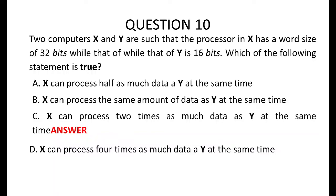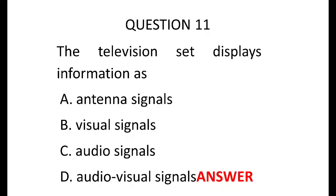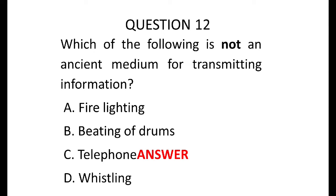Question number 10: two computers X and Y — processor in X has a word size of 32 bits, while the data of Y is 16 bits. Which of the following statements is true? The correct answer is C: X can process two times as much as Y at the same time. Question 11 says: the television set displays information as what? It displays information as audiovisual — audio means you can hear and visual means you can see at the same time.